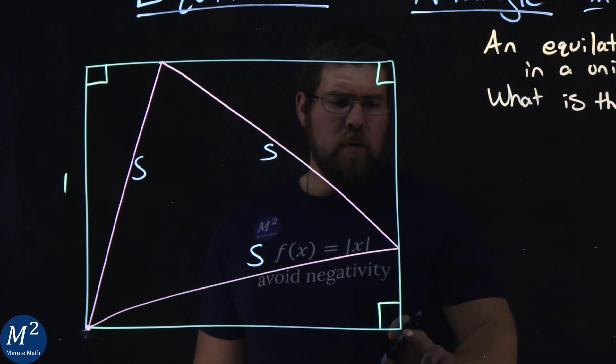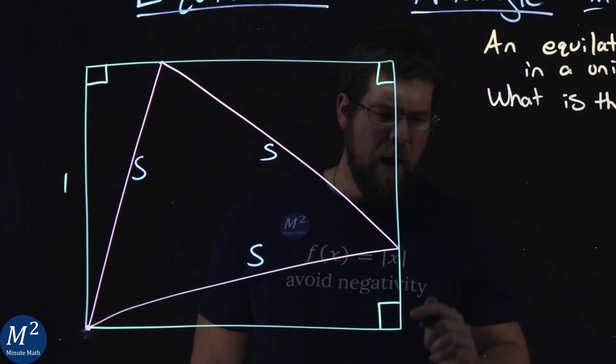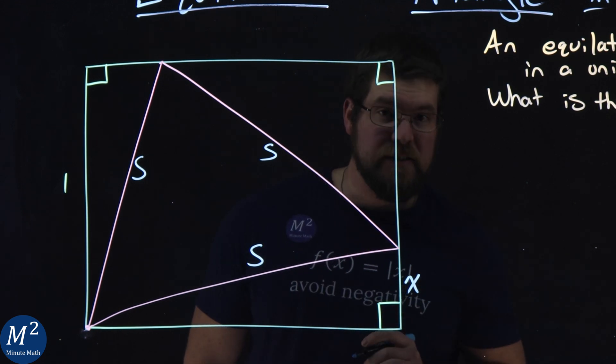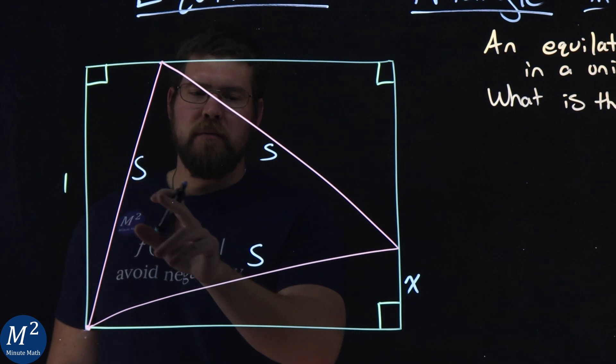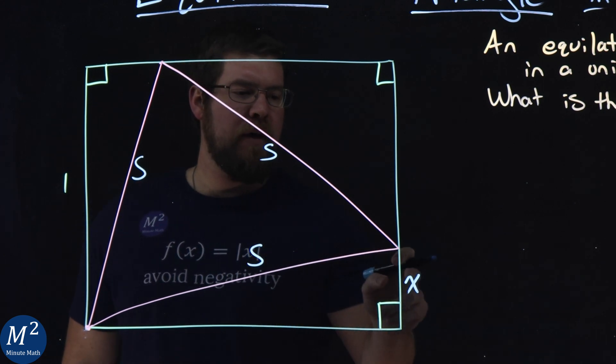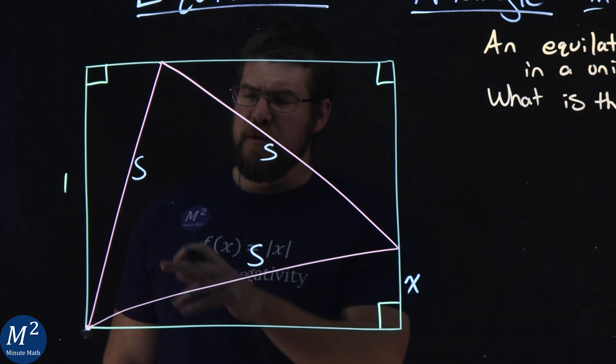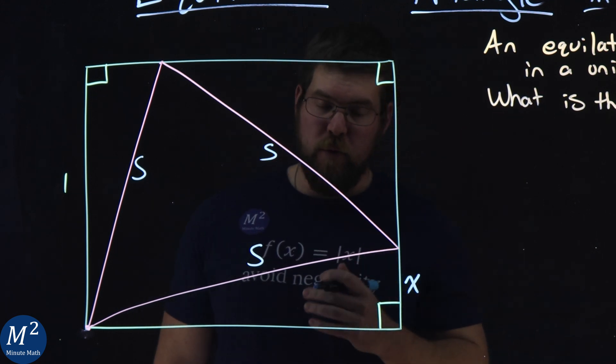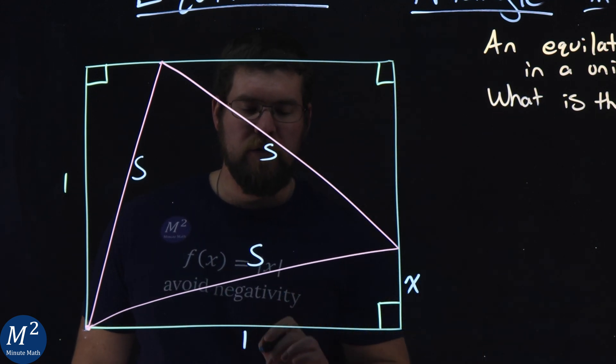This little space here in the corner of the right angle of the square, I'm going to label that X. So now I have S for a side length here, I have X for this length, and since this is a unit square, this side length here is also one.